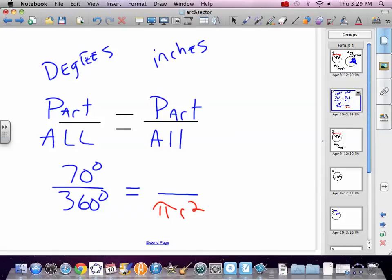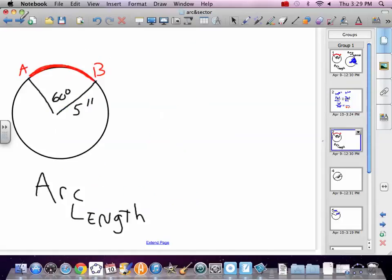Part over all. Part over whole, if you want. So let's do a problem. So we have, we don't know how far from A to B. So we need to set up our proportion. And we know that we have 60 degrees of the circle. All of the circle is 360. And part is from A to B, which we're going to call x. And all of the circle is, now we're doing length here, so it's 2 pi r. And r, in this case, is 5.